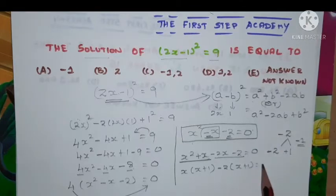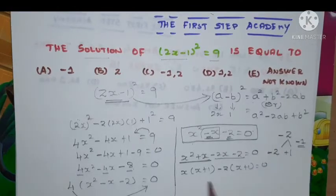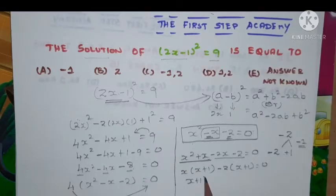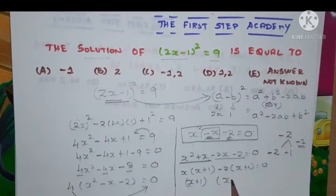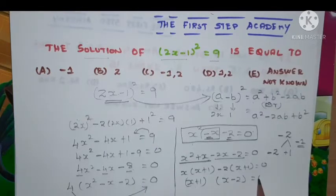Now what we can get, so (x+1) is common in these two, I have taken it outside. Rest of the value is (x-2) which is equal to 0.